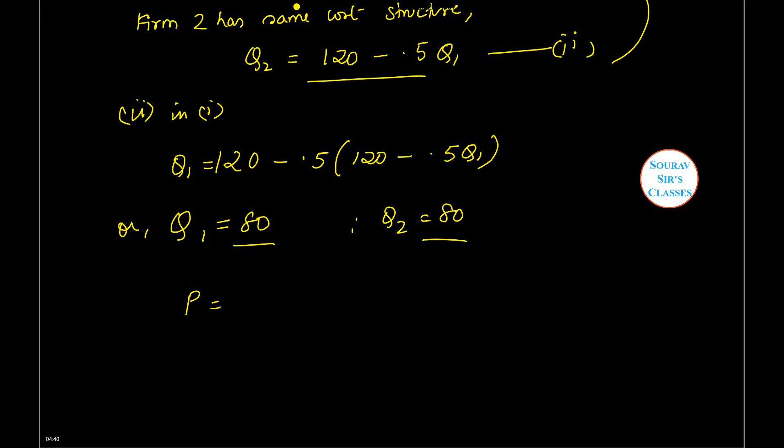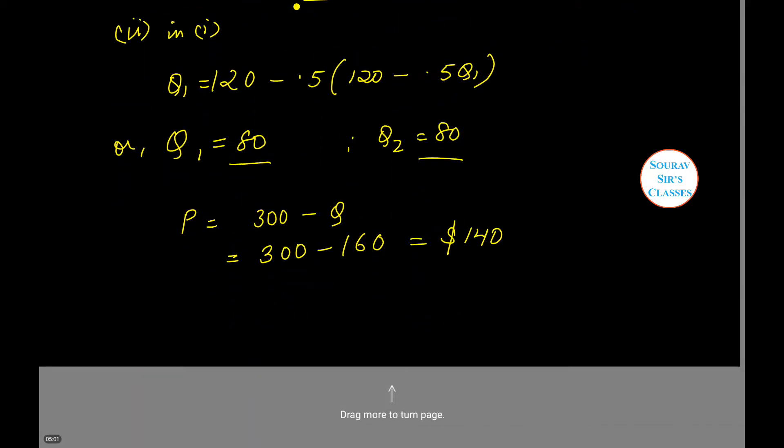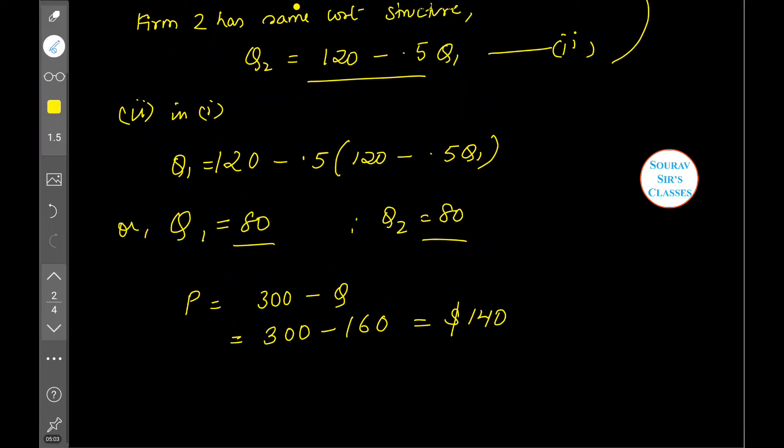Now if I substitute these two values in the demand function, I can determine the price. Price was given by 300 minus Q, where Q is Q1 plus Q2, so it is 300 minus 160. The price comes to be $140. Now we also need to calculate the profits at the Nash equilibrium.